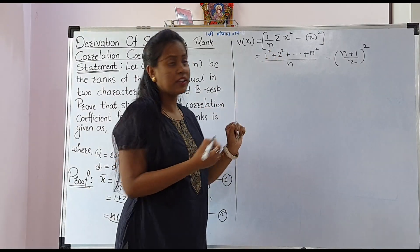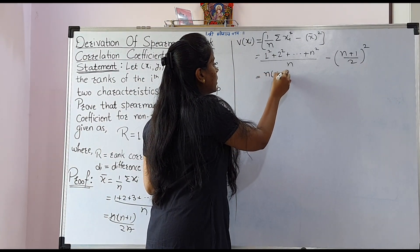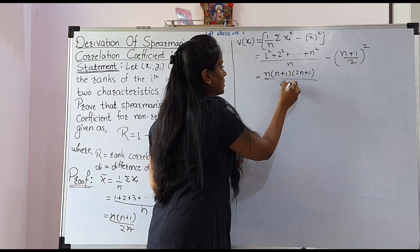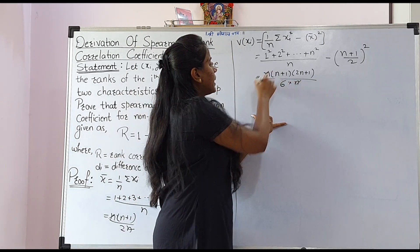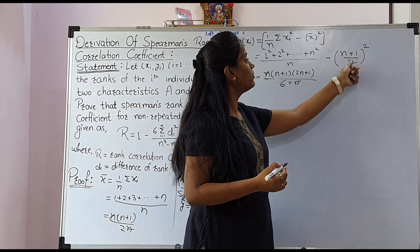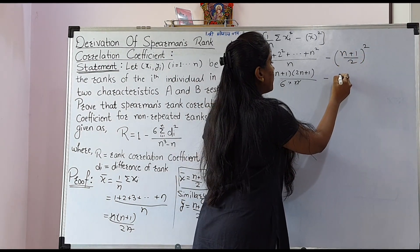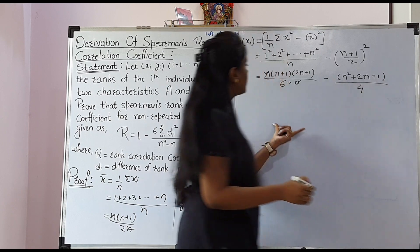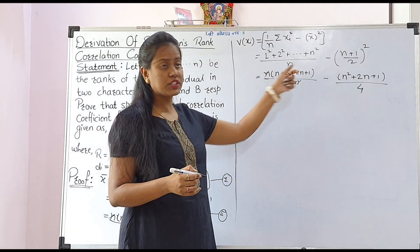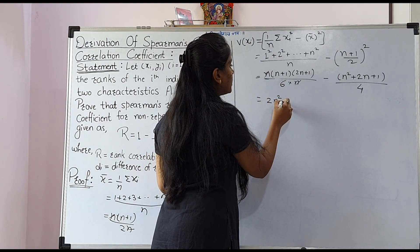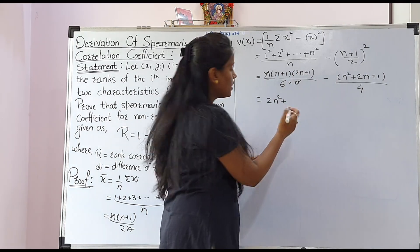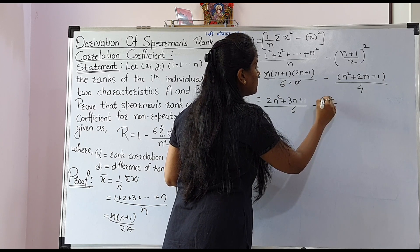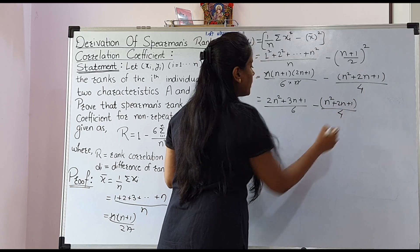The sum of squares of the first n natural numbers is n(n+1)(2n+1)/6, divided by n. So the n's cancel and we get [n+1)(2n+1)/6] minus [(n+1)²/4]. Expanding: (2n² + 3n + 1)/6 minus (n² + 2n + 1)/4.